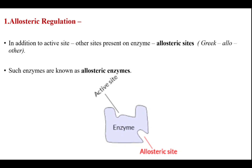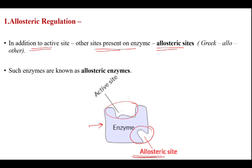First is allosteric regulation. In addition to the active site, other sites present on the enzyme are called allosteric sites. In Greek, 'allos' means other. This is an enzyme and this is the active site. In addition to the active site, if another site is present, that particular site is called the allosteric site, and the enzymes which have this allosteric site are called allosteric enzymes.